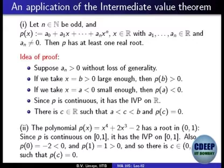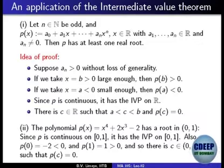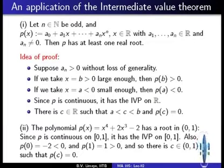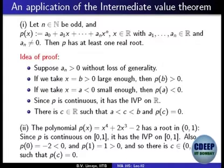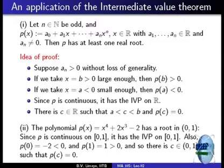Here is the argument. Suppose a_n is bigger than 0. The term x^n is dominating. If you divide throughout by x^n, you get a_n plus lower-order terms divided by x, and so on. When x becomes positively large, the lower terms fall off and the dominating term a_n remains. So for some sufficiently large b, the value of the polynomial p is positive. By the same token, for a sufficiently negative a, the value will be negative.